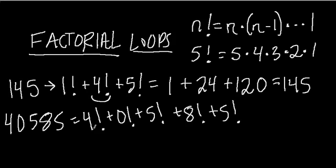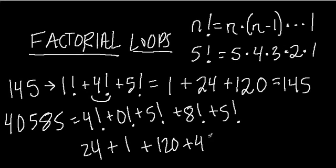Four factorial is 24. Zero factorial is 1, which we'll talk about in other videos. Five factorial is 120. Eight factorial is a really large number, right? Eight times seven times six times five times four times three times two times one, and that gives us 40,320, plus another 120. Now, if we add up all these, right, we do get back to this number. So, again, that was a one-step loop.